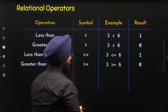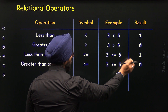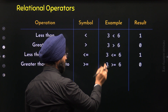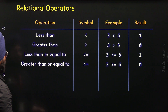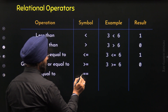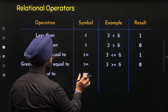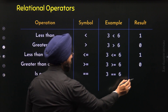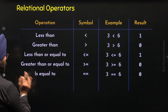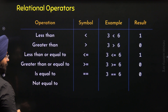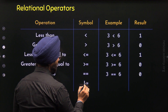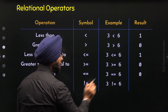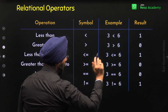The fifth operation is is-equal-to, with the symbol being a double equal sign '=='. The example is 3 == 6. We know 3 is not equal to 6, so we get 0 as the result. The sixth and last operation is not-equal-to. The symbol is '!=' — an exclamation mark with an equal sign. The example is 3 != 6. We are checking whether 3 is not equal to 6. Since 3 is indeed not equal to 6, we get 1 as the result.